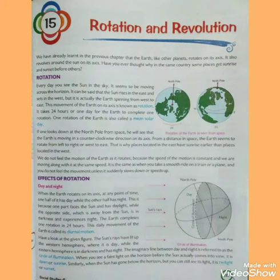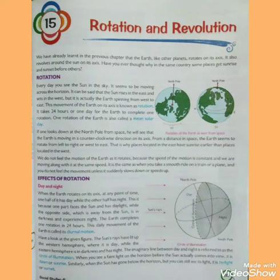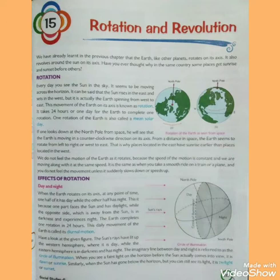We have already learned in the previous chapter that the Earth, like other planets, rotates on its axis. It also revolves around the Sun. Have you ever thought why in the same country some places get sunrise and sunset before others?